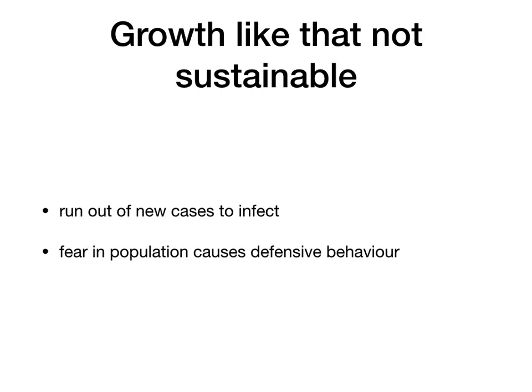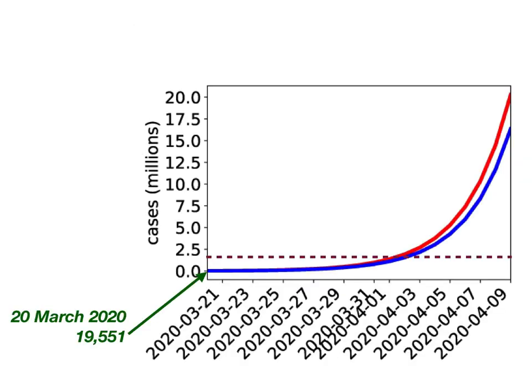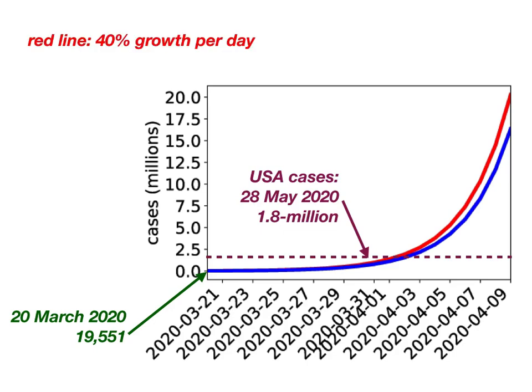Fear in the population also causes defensive behavior. So let's look at what would have happened if that exponential growth hadn't actually stopped. Back on the 20th of March, the United States had under 20,000 cases. By the 28th of May they had just under 1.8 million. If cases had grown at the exponential rate seen through much of March, the red line represents 40% growth per day and the blue line 20% growth per day. Clearly 1.8 million cases is not nearly as bad as those predictions — it didn't grow exponentially.